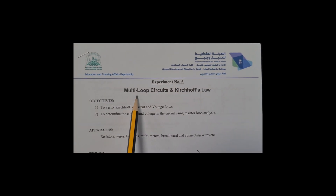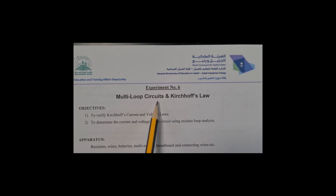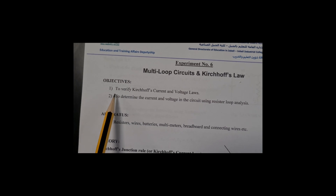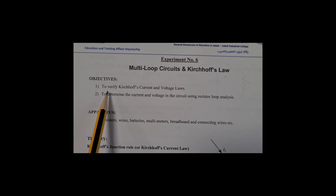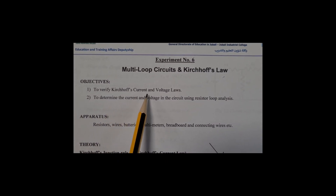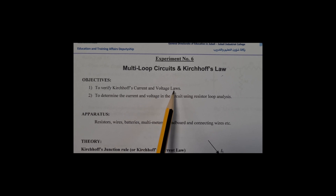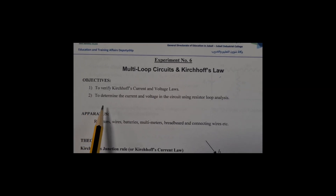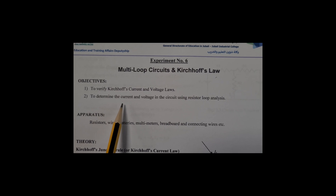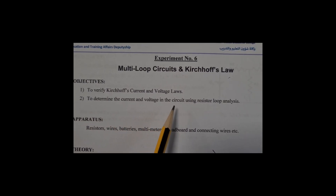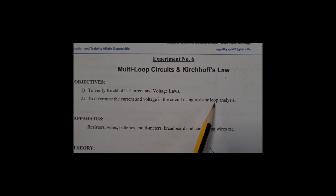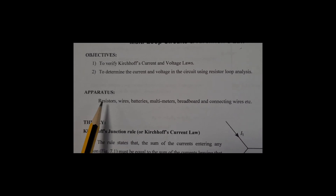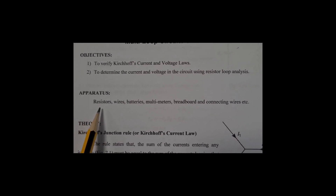Experiment 6: Multiloop Circuits and Kirchhoff's Law. The first objective of this experiment is to verify Kirchhoff's current and voltage laws. Objective number 2 is to determine the current and voltage in the circuit using resistor loop analysis.